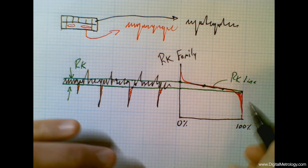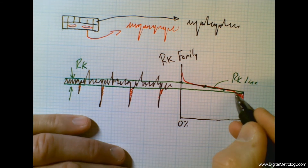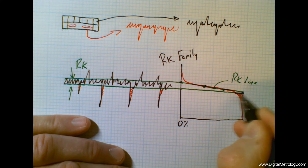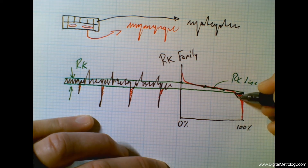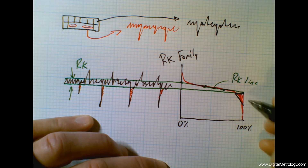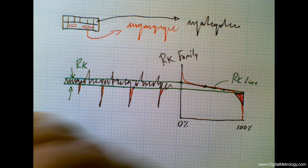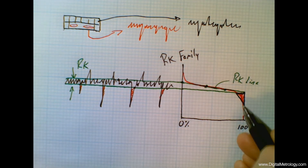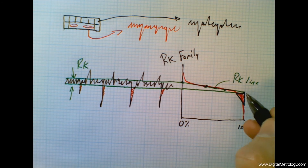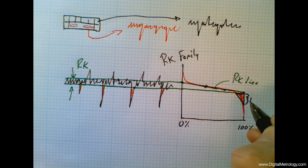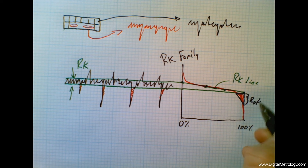We can use that area and its upper boundary to come up with a parameter for an effective valley depth. If I make a black triangle here of the same exact area as the red zone, the depth of this black triangle is kind of an effective valley depth.